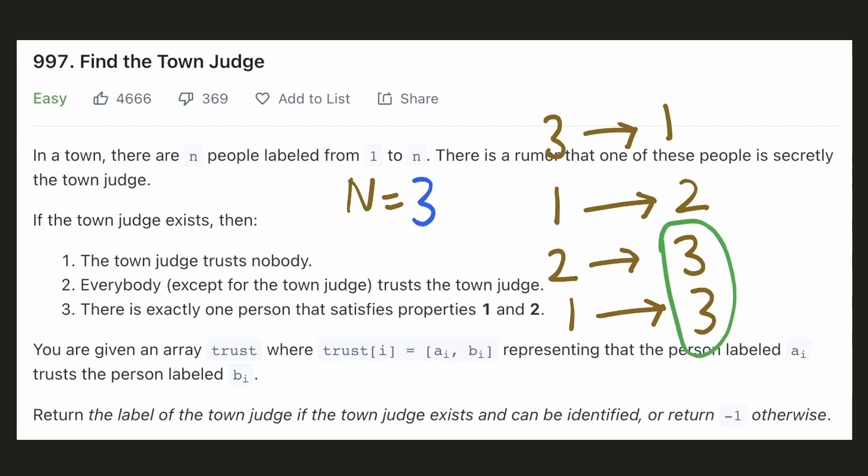On the other hand, if person 3 were to trust somebody else, even though everybody in the town trusts person 3, since the judge cannot trust anyone else, it cannot be the town judge.